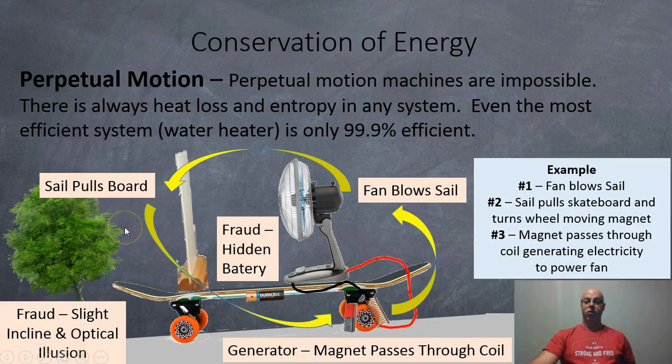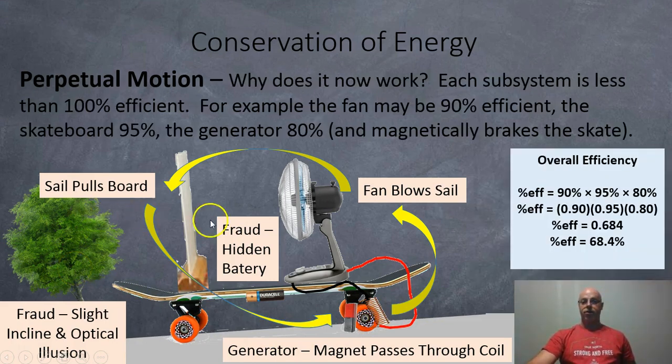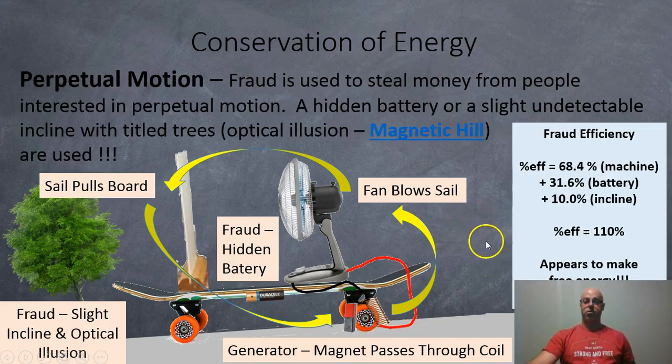Okay. So if you want to defraud somebody, you want to fool them into your perpetual motion machine, you might do a few things. So one thing you could do is hide a hidden battery somewhere to make up the difference. Or you can put it on a slight incline. And if you find some tilted trees, you get an optical illusion. So, for example, here, let's say that the fan is 90% efficient, skateboard is 95%, and let's say the generator is 80% efficiency. So all together, we get 90% times 95% times 80%. That's 0.90 times 0.95 times 0.80. And we end up getting 68.4%. So what do you do? If you want to defraud people of their money, steal their money, or you actually think that you're going to get it to work, they're a little delusional, what do you do? So, hey, yeah, you just have your hidden battery, and you have your optical illusion.